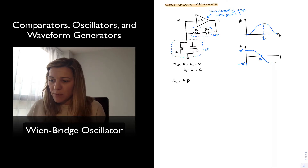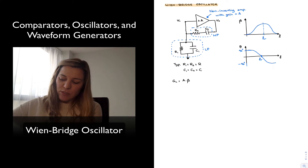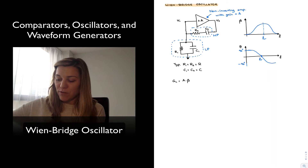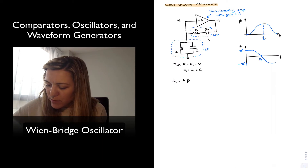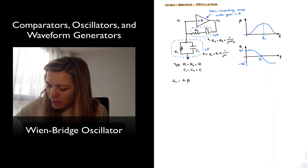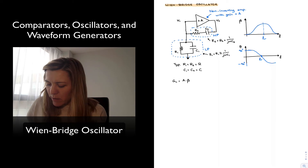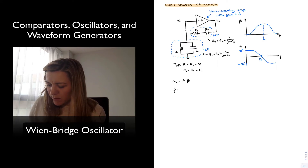Beta is going to be basically the ratio of my input voltage Vin to my output voltage Vout — the gain of the feedback network. This is the combination of impedance Z2, formed by the series combination of R2 and C2, so R2 plus 1 over jωC2, and impedance Z1, which is R1 in parallel with 1 over jωC1. Beta is going to be the result of dividing V1 by Vout.